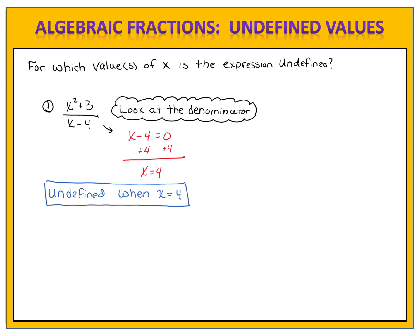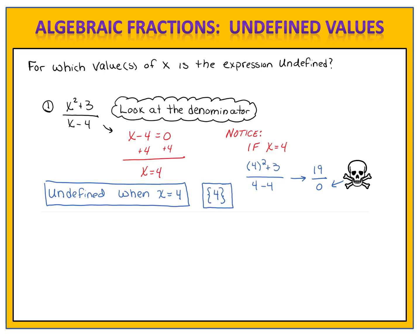Why is it undefined? If x equals 4, in the numerator x squared plus 3 becomes 4 squared plus 3, and in the denominator we have 4 minus 4. That gives us 19 in the numerator and zero in the denominator. We cannot divide by zero — it is undefined. Therefore x cannot be 4 for this algebraic fraction; it is the undefined value. Sometimes mathematicians write this using set notation, putting the undefined values in squiggly brackets, also called braces, to list them out.